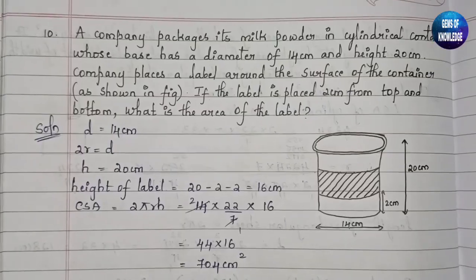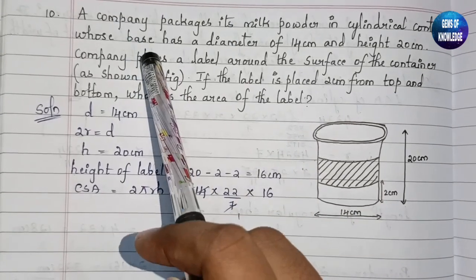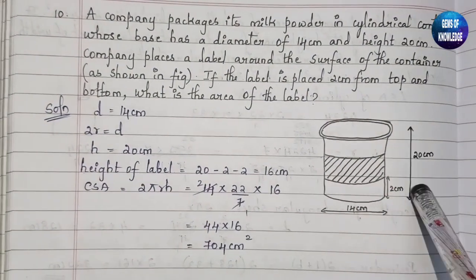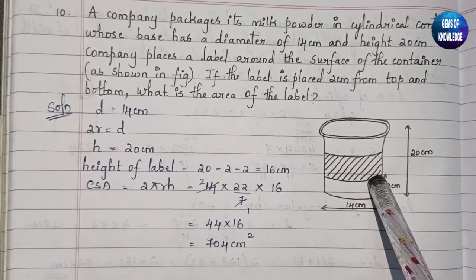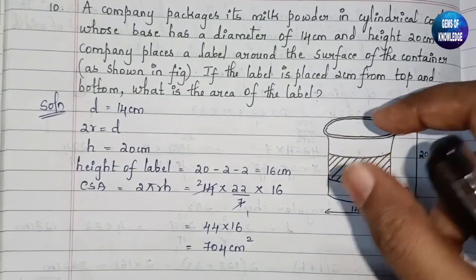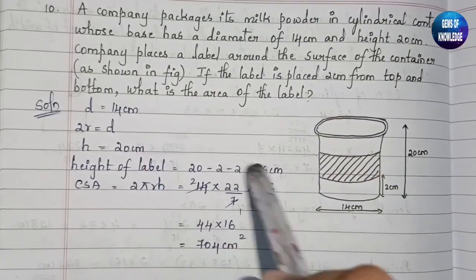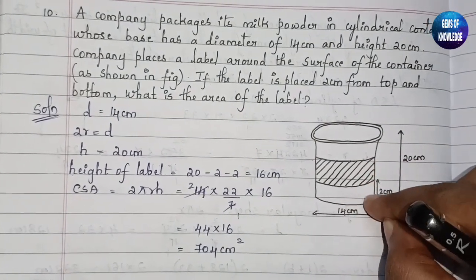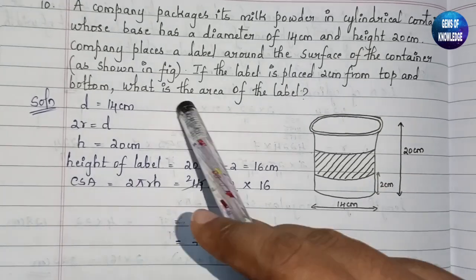Question 10: a company packages its milk powder in a cylindrical container whose base has a diameter of 14 cm and height 20 cm. The company places a label around the surface of the container. As shown in the figure, the label is placed 2 cm from the top and 2 cm from the bottom.